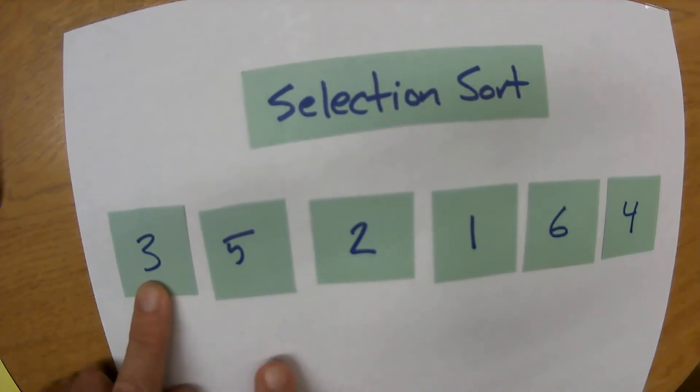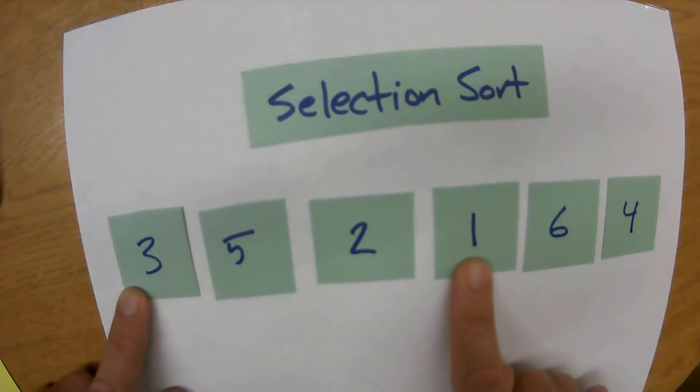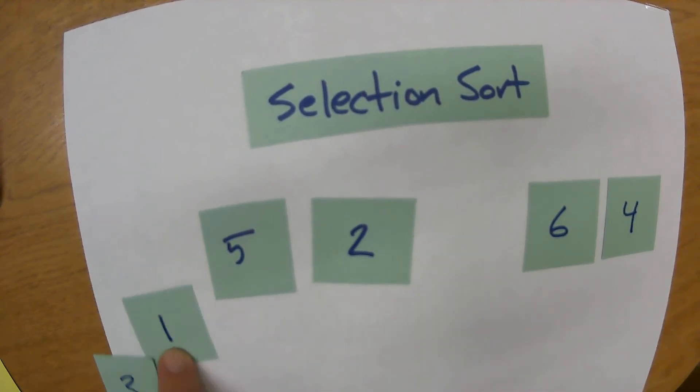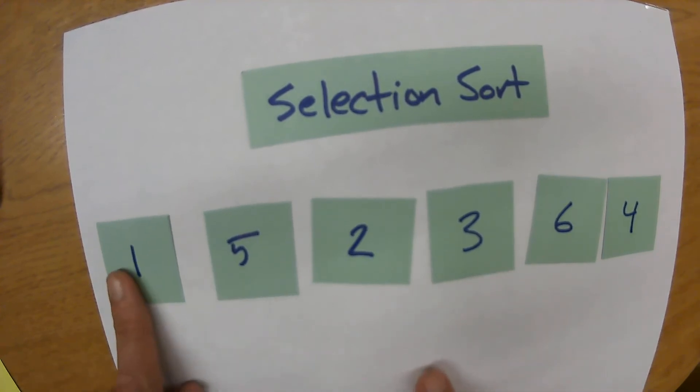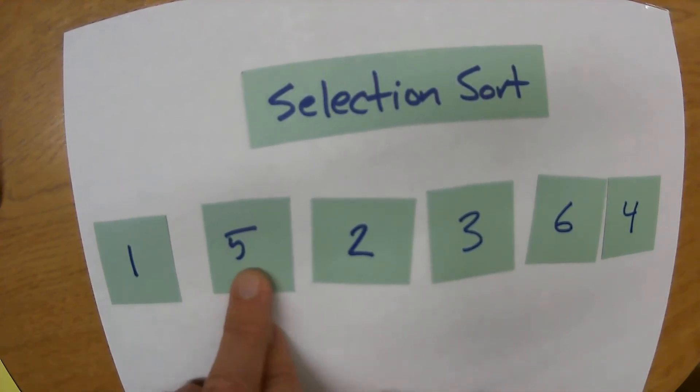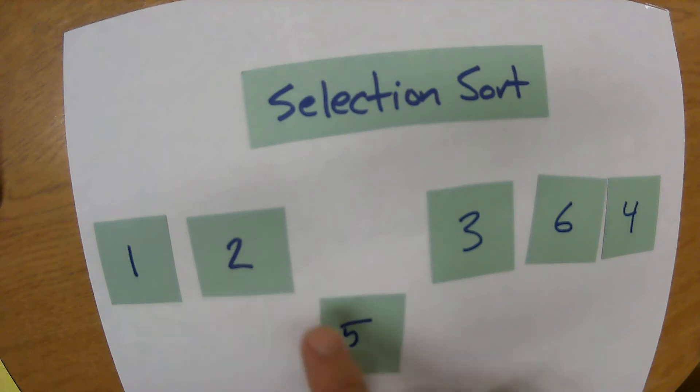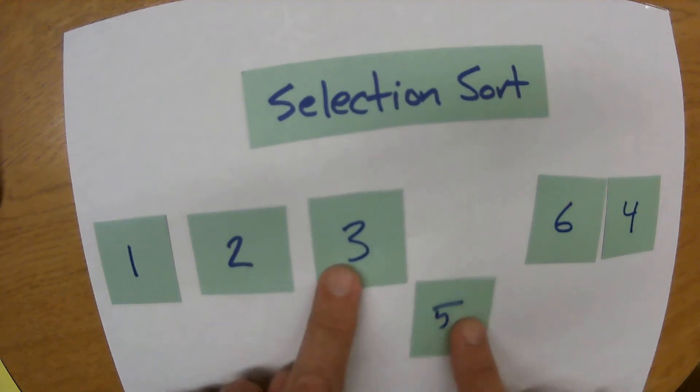And it's the one, so those two get swapped. Then we move over here because we know this is sorted. We find the minimum value in everything from the five on over and the minimum value is a two, so we swap these two values. Then we do it again and the minimum value is a three, so these two swap.